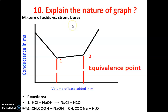Last question: Explain the nature of the graph. In general, we take a mixture of acids — HCl and acetic acid — in the beaker, and NaOH in the burette. Initially, without addition of NaOH, the conductance is very high because the beaker contains fast-moving H⁺ ions.